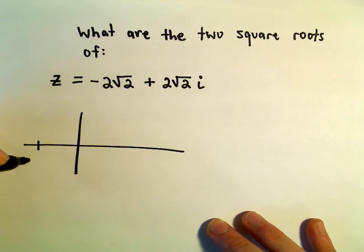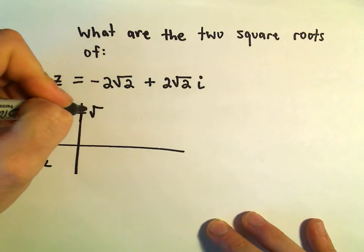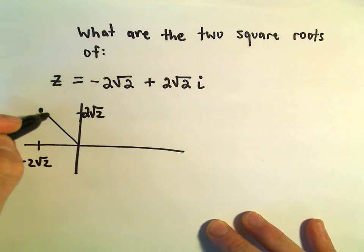So it says we go to the left, negative 2√2, and then we go up, positive 2√2. So there will be our complex number.